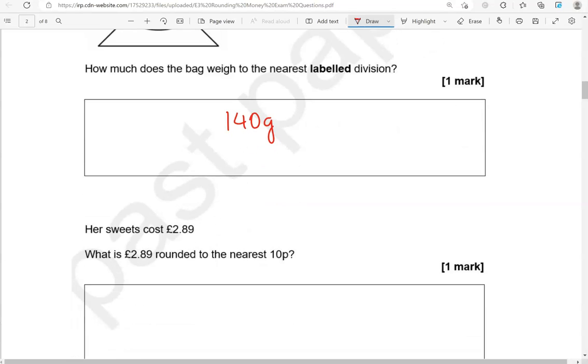Her sweets cost £2.89. What is £2.89 rounded to the nearest 10p? So £2.89. That's the pounds, that's the 10p coins, that's the pence coins. To the nearest 10p, so that's the one we are rounding. We can round it to £2.80 or £2.90. To decide, we're going to look on the right of that number. And then we have 9.